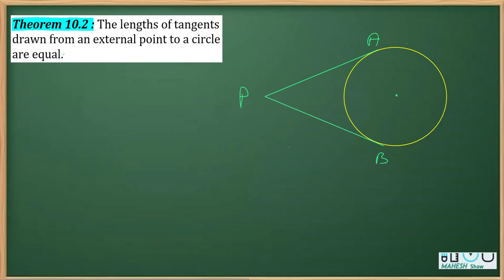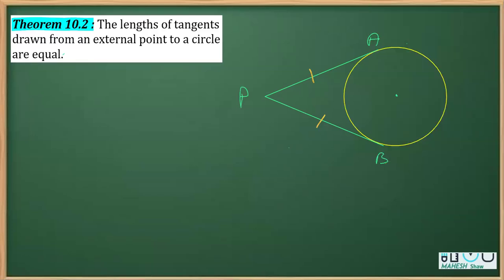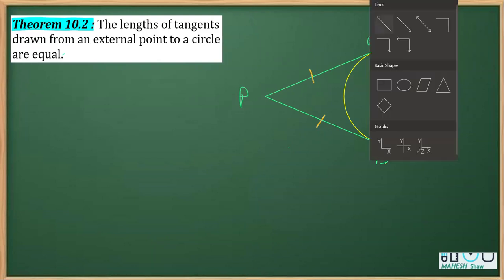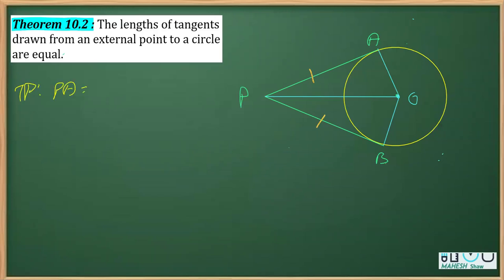What we need to prove is PA equals PB. The construction involved is joining the points of contact with the center O. So we join O to A and O to B. This O is the center of the circle. We also join P to O. So what is given is clear from the figure, and what we have to prove is PA equals PB.